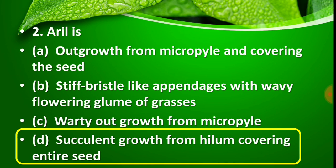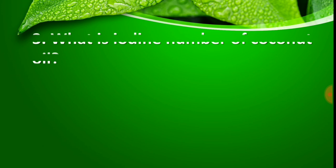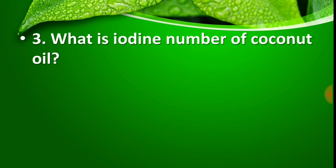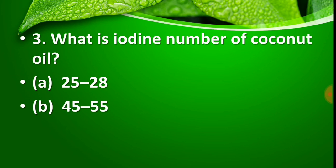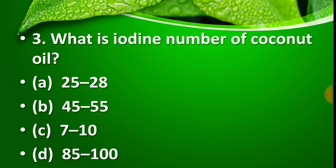Question number 3: What is the iodine number of coconut oil? Options are — Option A: 25 to 28, Option B: 45 to 55, Option C: 7 to 10, Option D: 85 to 100. The right answer is Option C — the iodine number of coconut oil is 7 to 10.